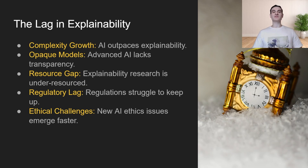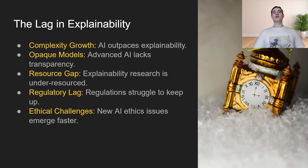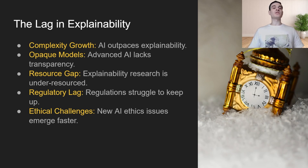Next up is opaque models. This goes into the way that these neural networks are trained. It's very black box in nature in that we feed something into it and get an output, but we have no idea what's going on on the inside. Next up is the resource gap. When it comes to AI development, all the business applications come with building a more complex model, and there isn't as much money to be made in being able to explain why the model is predicting the way it's predicting. Next up is regulatory lag — the power of these AI neural networks is increasing dramatically and they're getting all these new abilities, making it really difficult for regulatory authorities to keep up.